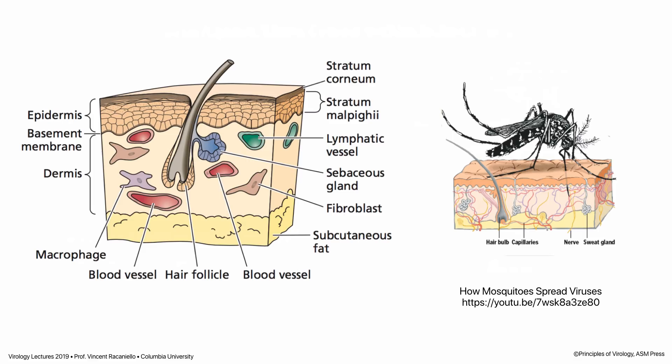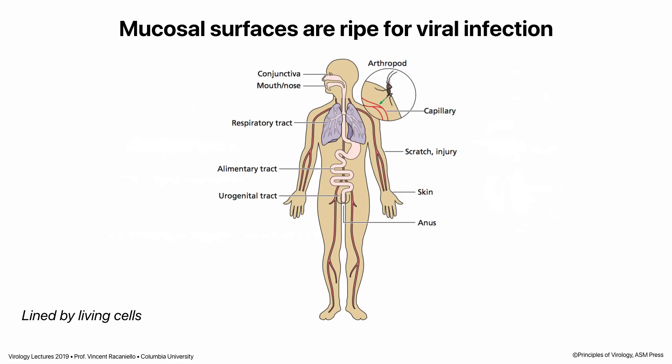Next we have mucosal surfaces, which are ripe for infection. We have this wonderful skin covering us, but unfortunately we have to respire — we need mucosal surfaces. We have lots of them: the conjunctiva, our eyes, the mouth and nose, the respiratory tract, the alimentary tract, the urogenital tract. These are all lined with living cells pretty much exposed to the environment, and most viral infections occur through mucosal surfaces.